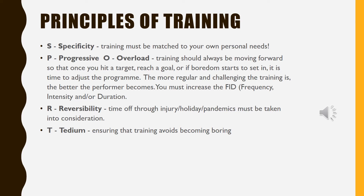P and O stand for Progressive Overload and they go together. Training should always be moving forward, so that once you hit a target, reach a goal, or if boredom starts to set in, it is time to adjust the program and make it slightly harder. The more regular and challenging the training, the better the performer becomes — so you must gradually increase the frequency, intensity, and duration.